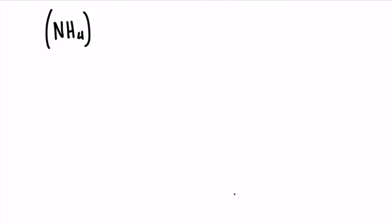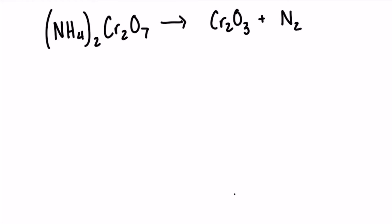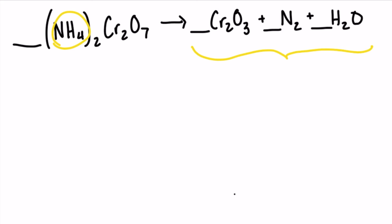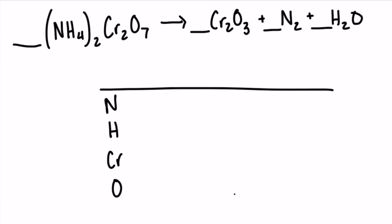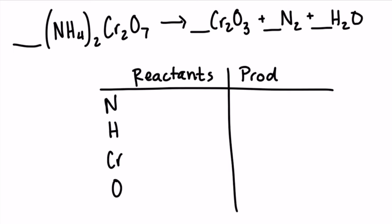We have ammonium dichromate — that's this whole thing in the reactant — yields CR2O3 plus N2 plus H2O. The parentheses in the reactant mean that there are two of those polyatomic ions, so the two distributes to everything inside the parentheses. Notice that my polyatomic ions are not the same in the reactant and the product — they look different — so we're not going to keep them together. We're going to balance this equation one atom at a time.